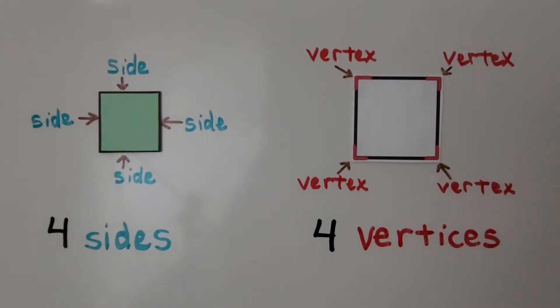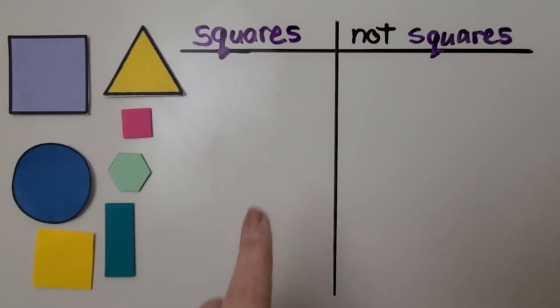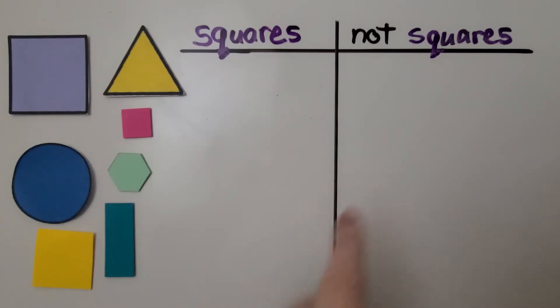It's like having one cookie or two cookies. Here we have many shapes. We can sort these shapes into sets of squares and not squares.